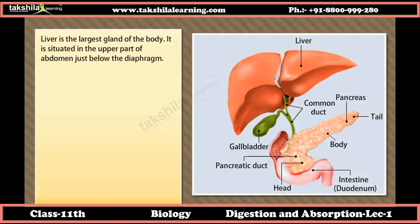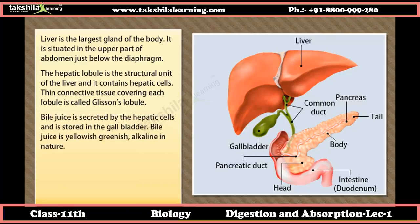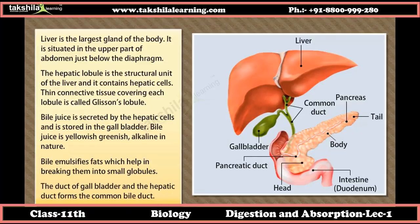The liver is the largest gland of the body, situated in the upper part of the abdomen just below the diaphragm. The hepatic lobule is the structural unit of the liver and contains hepatic cells. Thin connective tissue covering each lobule is called Glisson's capsule. Bile juice is secreted by the hepatic cells and stored in the gallbladder. Bile is yellowish-green and alkaline, and it emulsifies fats by breaking them into small globules. The duct of the gallbladder and the hepatic duct form the common bile duct.